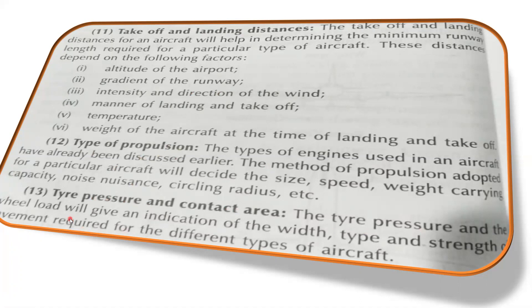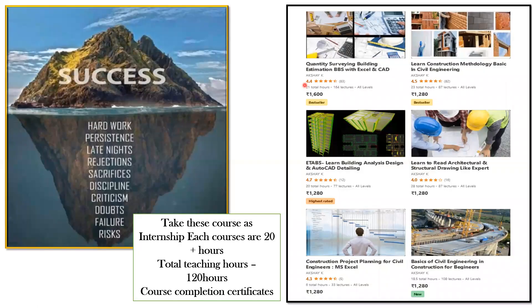The last characteristic is tire pressure and contact area. The tire pressure and wheel load give an indication of the width, type, and strength of pavement required for different types of aircraft. This was also a basis for the classification of airports. These are all the characteristics of an aircraft. This was almost entirely theory — if asked to write the characteristics of an aircraft, list all 10 to 12 points and explain four or five of them in detail.